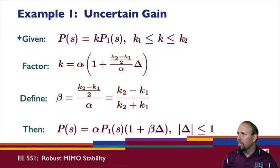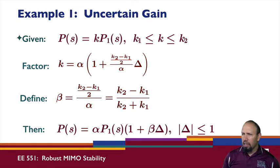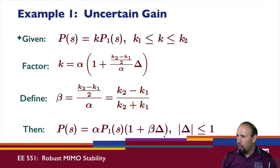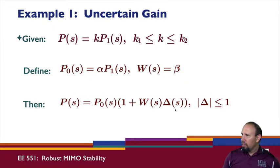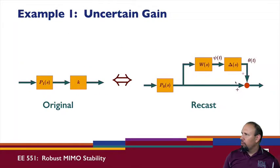This didn't happen by magic — we had to massage the expression until delta was less than or equal to one in magnitude. We define P0 as alpha * P1 and W as beta. We can now show that P(s) equals P0 times (1 + W * delta), which is exactly the standard multiplicative uncertainty form.